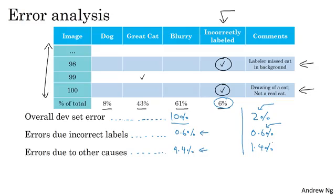When such a high fraction of your mistakes, at least as measured on your dev set, are due to incorrect labels, then it maybe seems much more worthwhile to fix up the incorrect labels in your dev set.